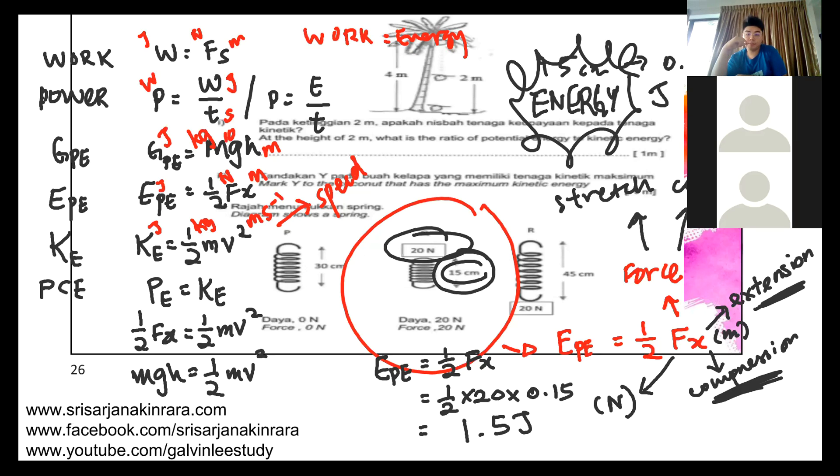Like in this example here, the coconut example. You know the mass of the coconut, let's say the mass is 1 kg. You know the g, g is always 10. You know the h, h is 4 meters. But do you know the v? You don't know the v. Can you calculate the v? Yes. What do I do? I use this formula. If I want to find the v of this coconut, let me show you.